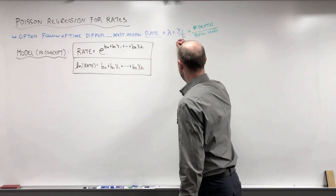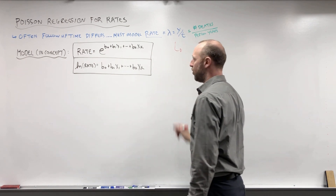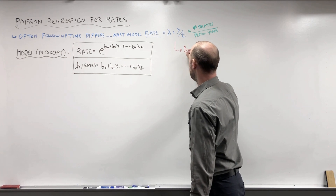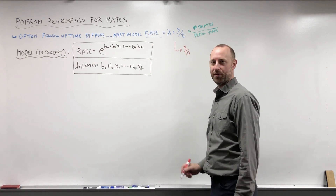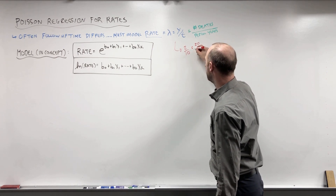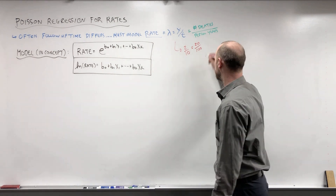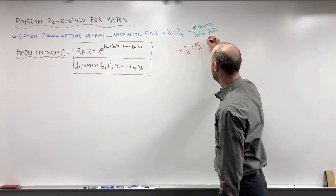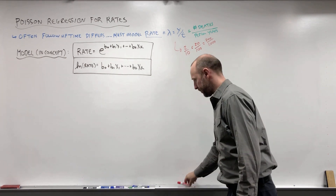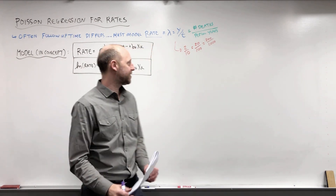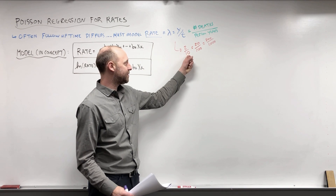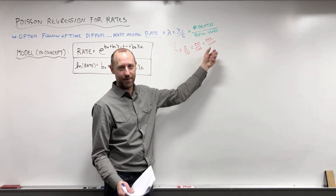To motivate this discussion, suppose we had two lung cancer deaths and ten person-years exposure. Or in a different group, twenty lung cancer deaths and a hundred person-years exposure. Or another group: two hundred deaths and a thousand person-years exposure. What I'm trying to show with this example is that in some sense these are all the same rate — and they are the same rate.